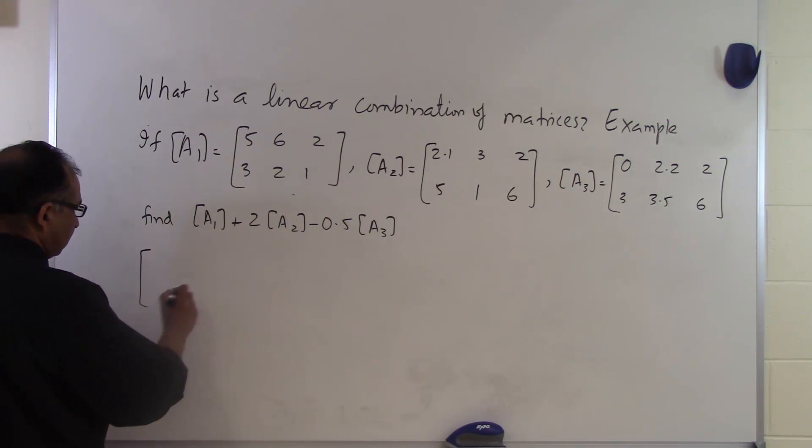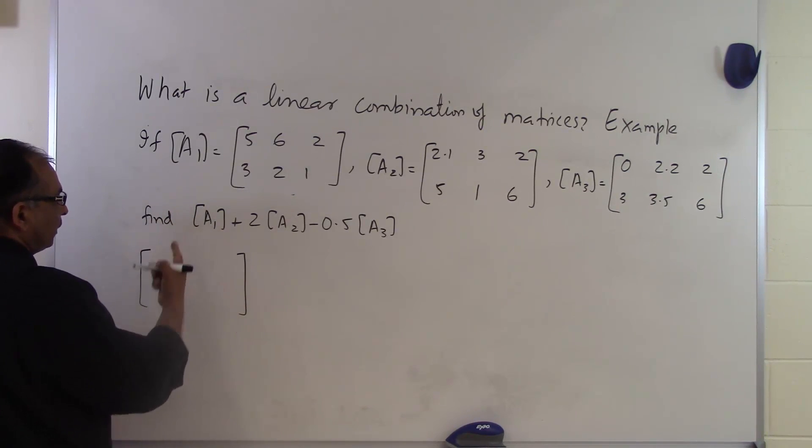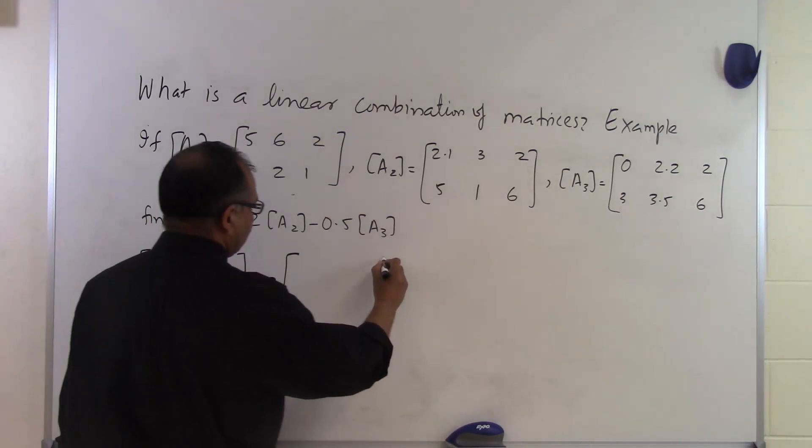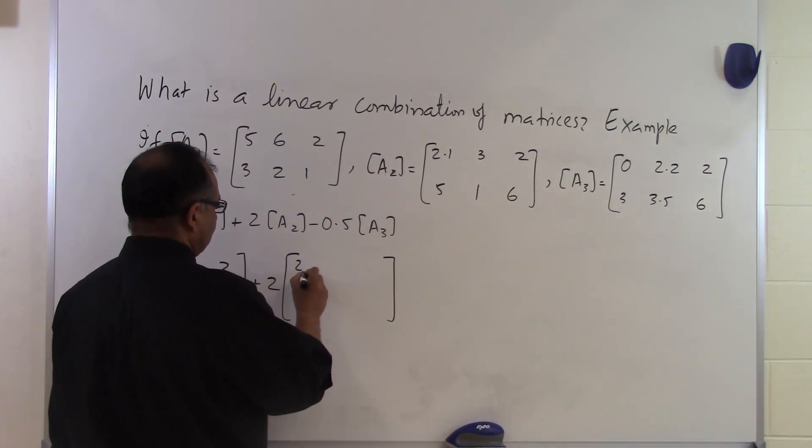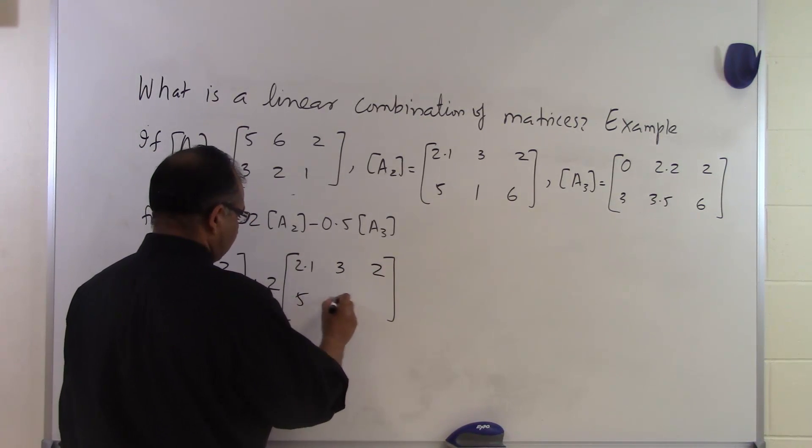So if I'm going to take the first matrix, I'm going to multiply it by 1 because that's what's in front of it. It will stay 5, 6, 2, 3, 2, 1. Then I'm going to take the next matrix, I'm going to multiply each element by 2, so I'm putting the 2 here for the time being, 5, 1, and 6.